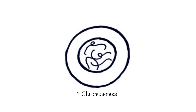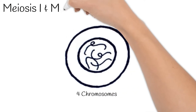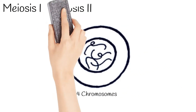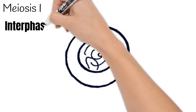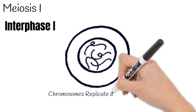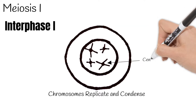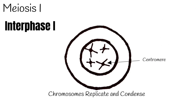Meiosis has two phases, called meiosis 1 and meiosis 2. Meiosis 1 starts with interphase 1. Chromosomes replicate and condense. The original and the replica are joined with a centromere, just like during mitosis.